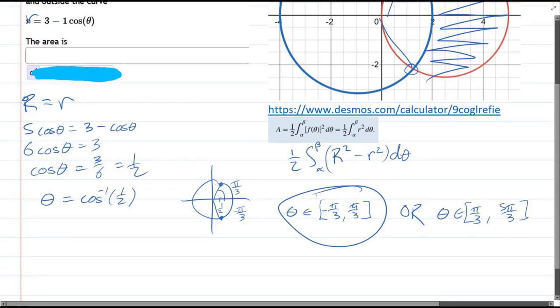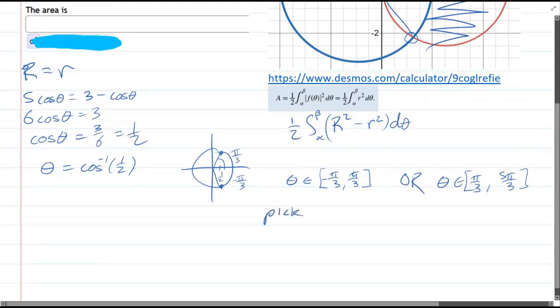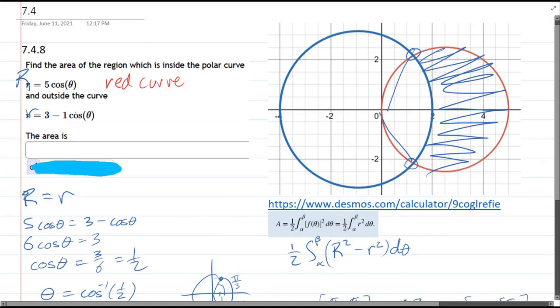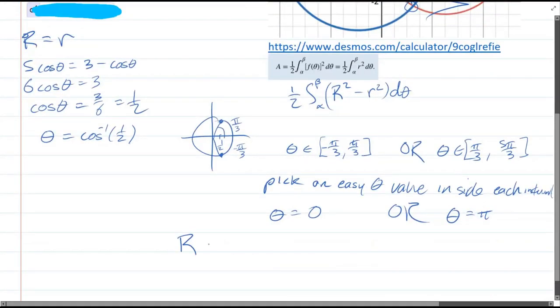How do I figure out this is the interval and not that one? Pick an easy theta value inside each interval. The easy one here is 0, and here is pi. I want inside the red and outside the blue. Big R should be big, little r should be little.